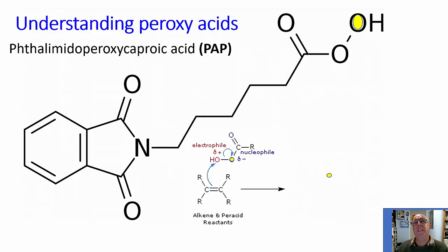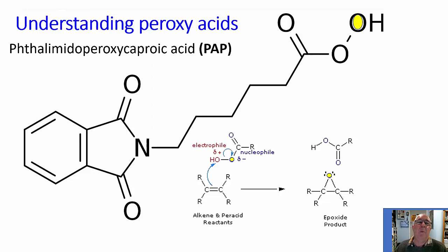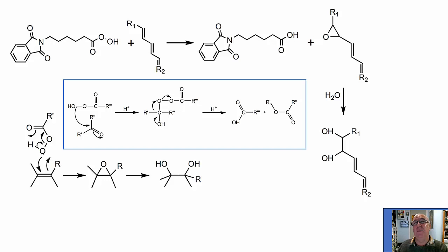So let's now take that and apply it to PAP — phthalimidoperoxycaproic acid. It has this hungry oxygen, which is going to attack the double bonds and the ring structures. As that happens, it's going to form that little triangular epoxide product, which itself will then further break down. But we've got rid of the double bond, and this is where the action of the bleaching actually occurs. While we have a hungry oxygen at one end, the entire molecule itself is actually very, very large, and it has a very high specific activity. When placed together with double bonds or with molecules with ring structures, the reaction rate is very fast — it's very quick acting.